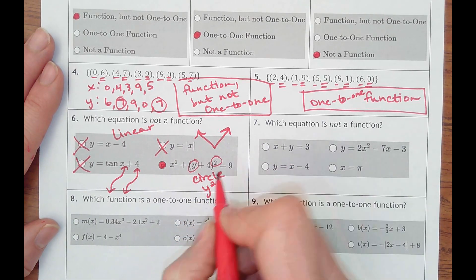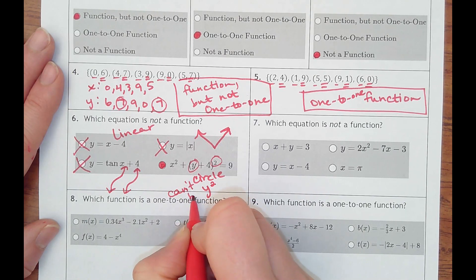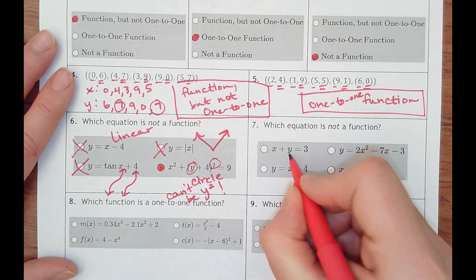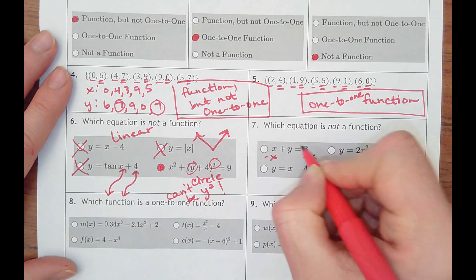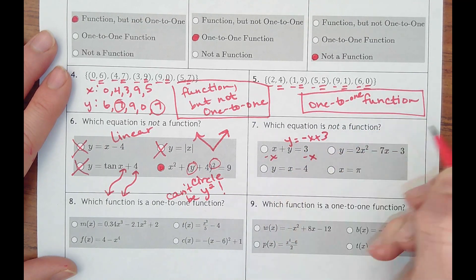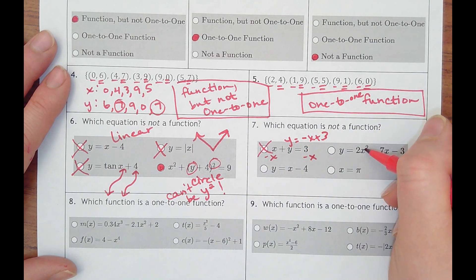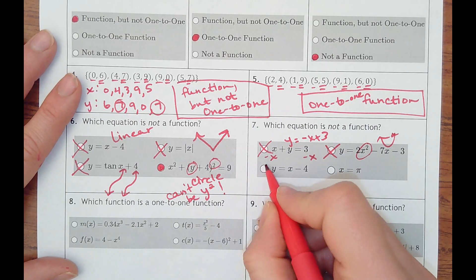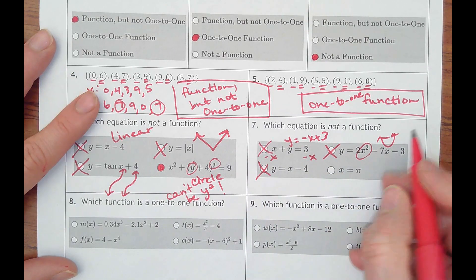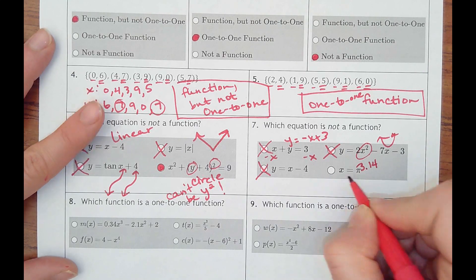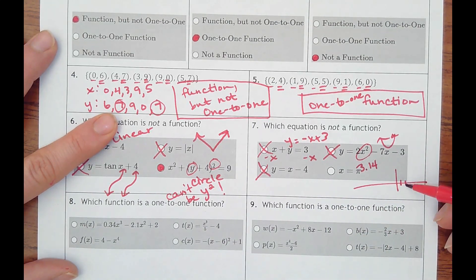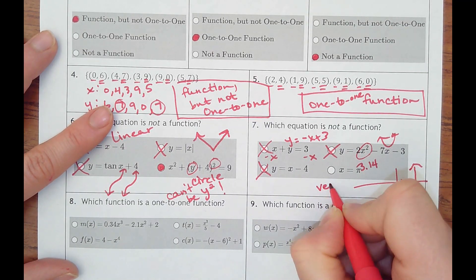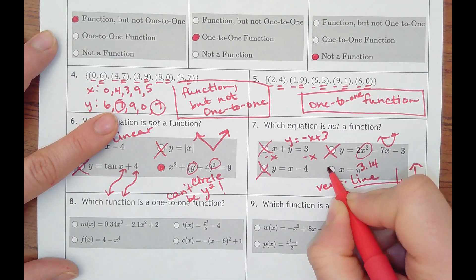It can't be y squared in it. Number 7. Which equation is not a function? This could easily subtract x over. And this is y equals negative x plus 3. That's linear. So that one is a function. This is quadratic, because I see x squared. That is a function. Y equals x minus 4 is obviously a function. x equals pi. Think of pi as 3.14. When I have x equals a number, it's got to cut through the x-axis at that point. So it's a vertical line, which is not going to pass the vertical line test. So that is not a function.